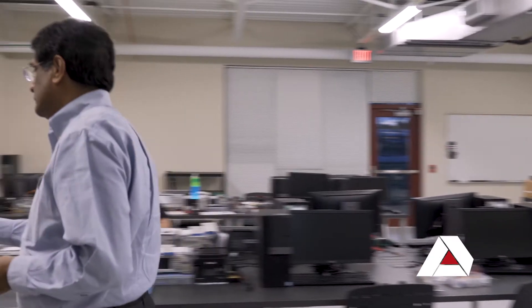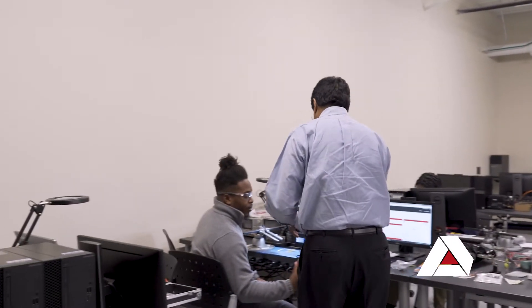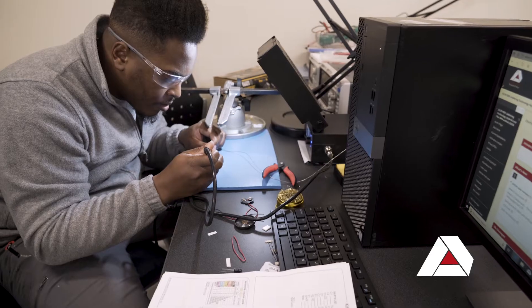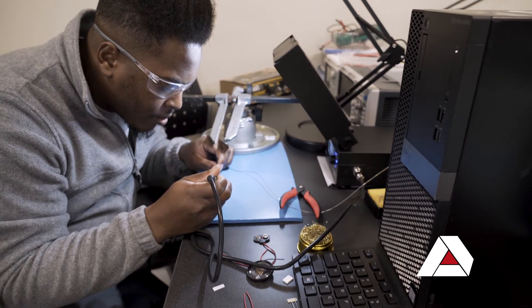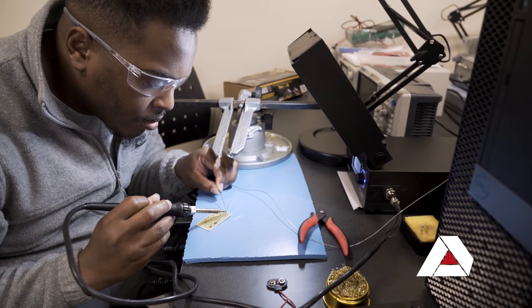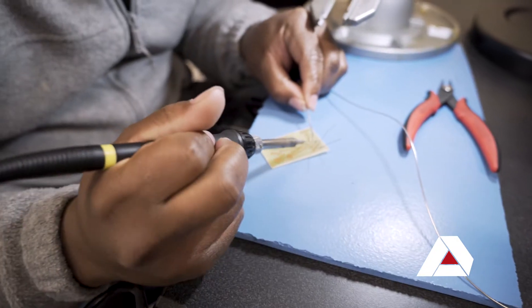The program is the electronics program here at Albany Technical College and we have an associate's and we also have a diploma program. The associate's is a two-year program, the diploma is one year. Sometimes it takes students a little bit longer because most of them work and so they are part-time students.